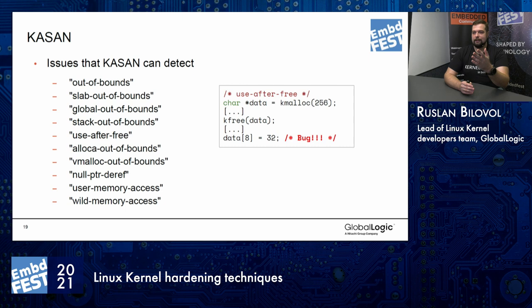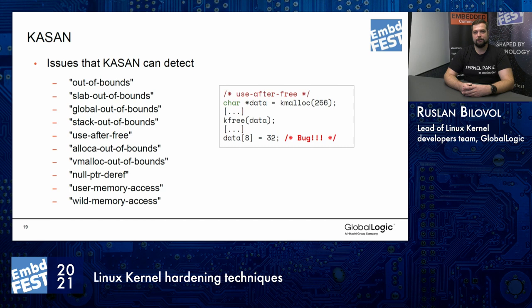The issues that KASAN can detect is really huge. It detects issues with memory access — like out-of-bound access, use-after-free, null pointer dereference, et cetera. One simple example: if you allocated memory, worked with that memory, freed that memory, and then tried to access it again — that's a bug. What is bad is that if you don't have KASAN, it may still work. There are many systems that still work with such issues — they might not cause any regression in the current setup. But in the future, when you move to a new kernel version or change your configuration, it can crash your system. That kind of bug is difficult to debug without KASAN, but with KASAN it's much, much easier.